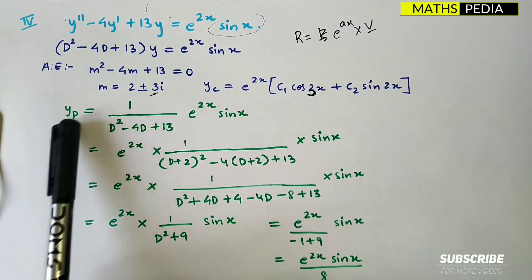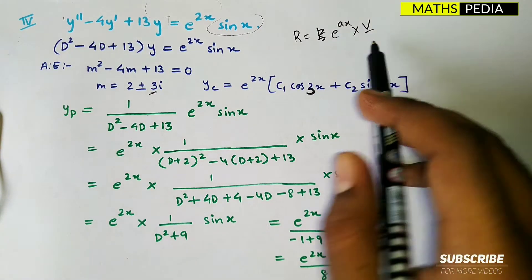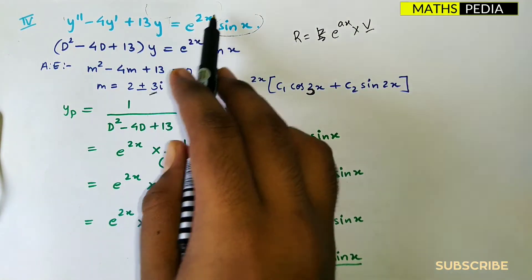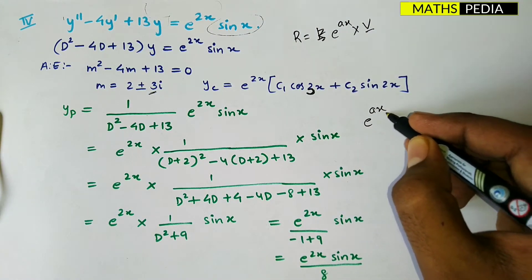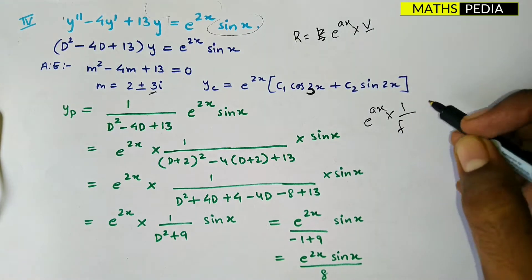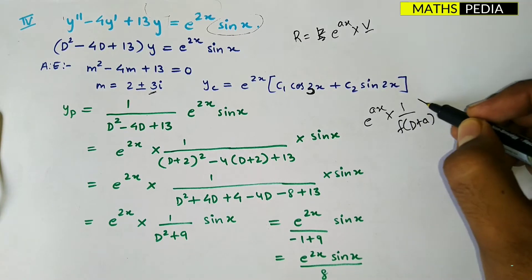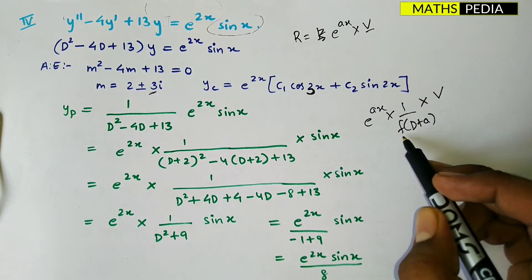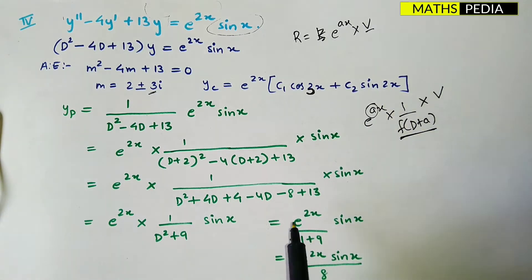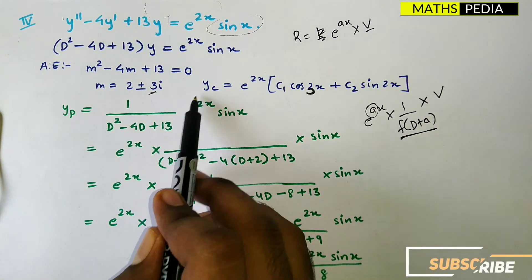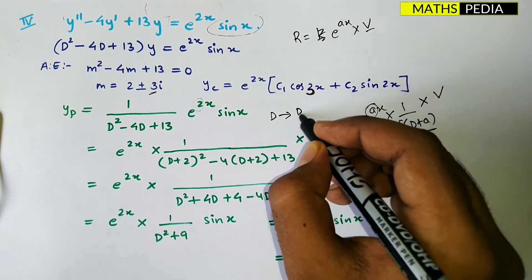Now let us see how to find yp for this case. This is the product of two cases — sine x and e^(ax) are both present. For this case, always remember: yp will be e^(ax) into [1/f(D)] into v, where in f(D) you have to replace D with D+a. Here a is 2, so you replace D with D+2.